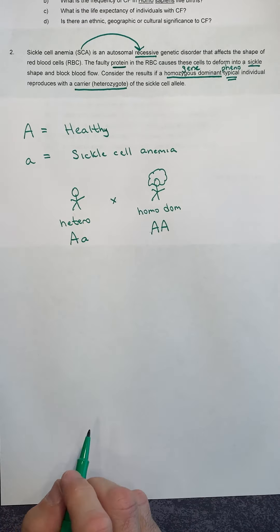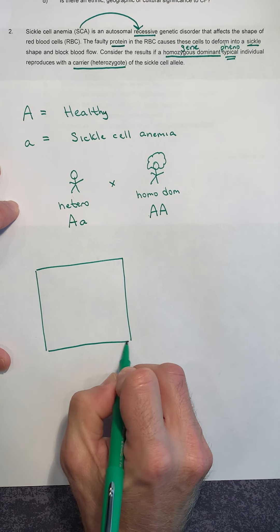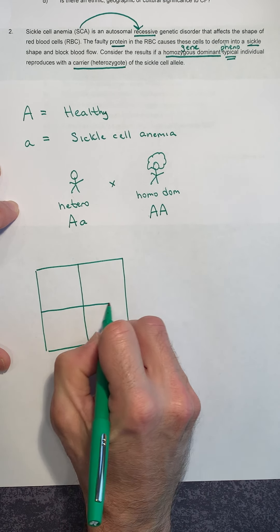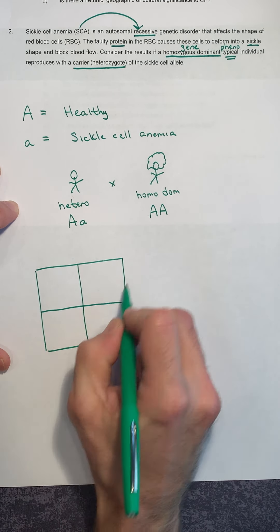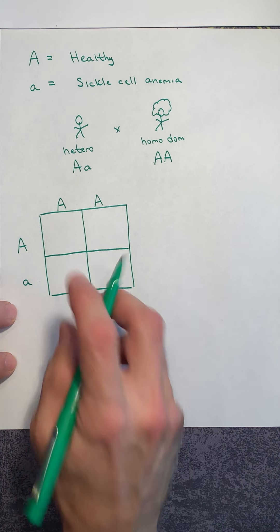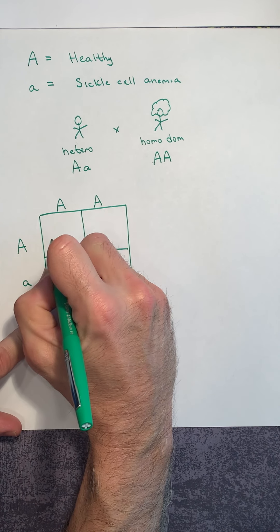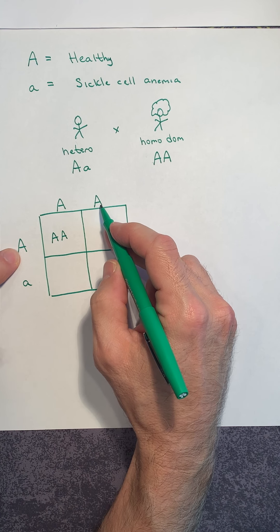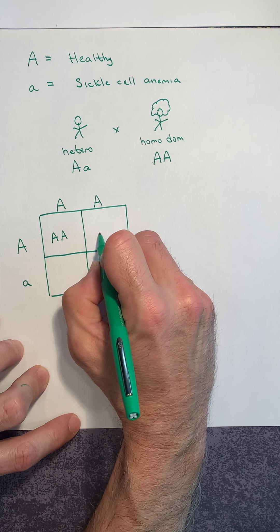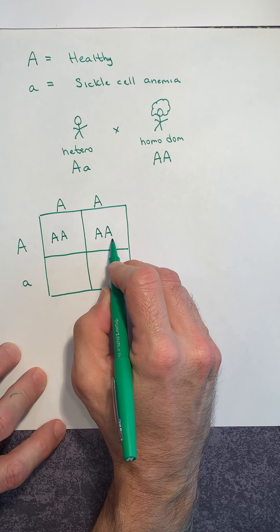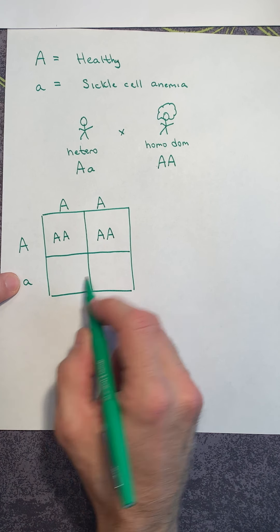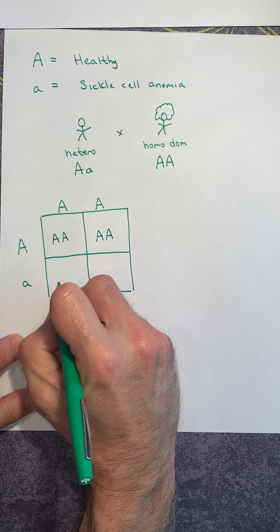Now step four, we make our Punnett square. Whether we put her contribution on top or on the side doesn't matter. So I'll take her big A, big A and put it on top. I'll take his big A, little a and put it on the side. So there's our Punnett square. Now let's see what they could have for children. So big A, big A is then this square here. This is big A, big A. Then here and here come together here. That would make this square, big A, big A. This square down here, this one and this one, they come together, big A, little a. Here and here come together, big A, little a. Done.